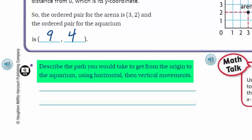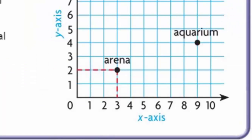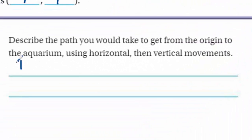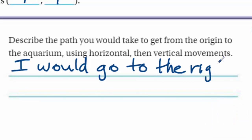It says: describe the path you would take to get from the origin to the aquarium using horizontal, then vertical movements. I would first go to the right — go to the right all the way to nine. Then I would go up, go north four units because it's four units high. So: right nine units, then up four units.